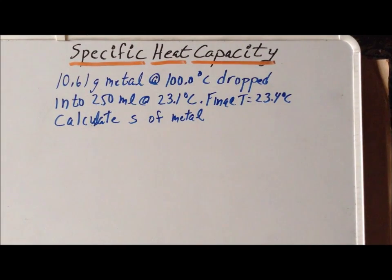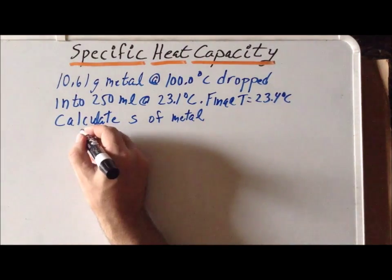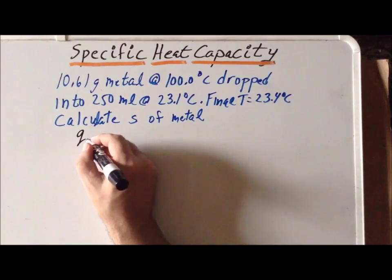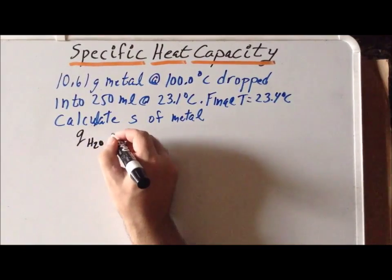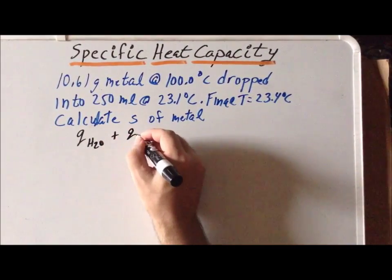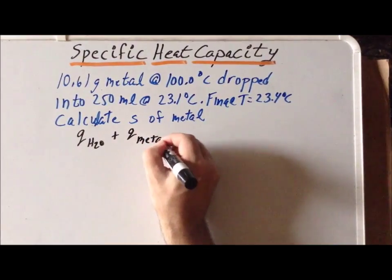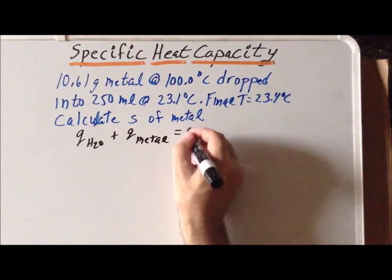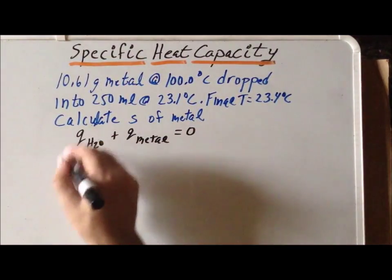The final equation that we need to make use of to solve this problem makes use of the law of conservation of energy. So we know that in an isolated system, that Q of H2O plus Q of the metal has to be equal to zero.